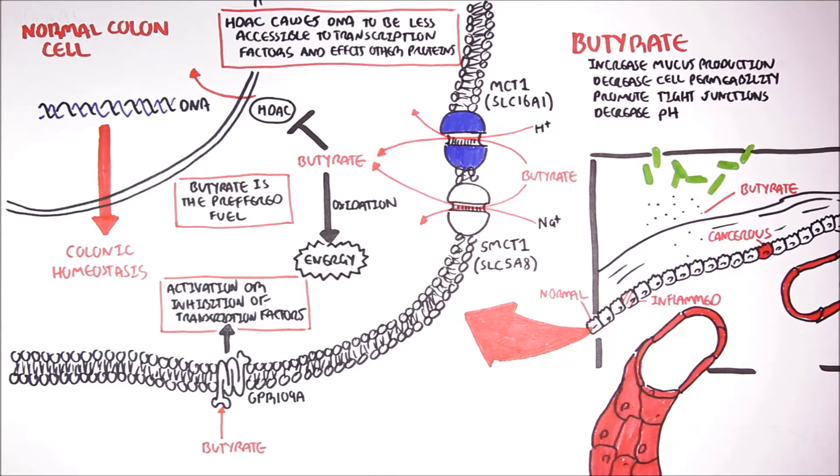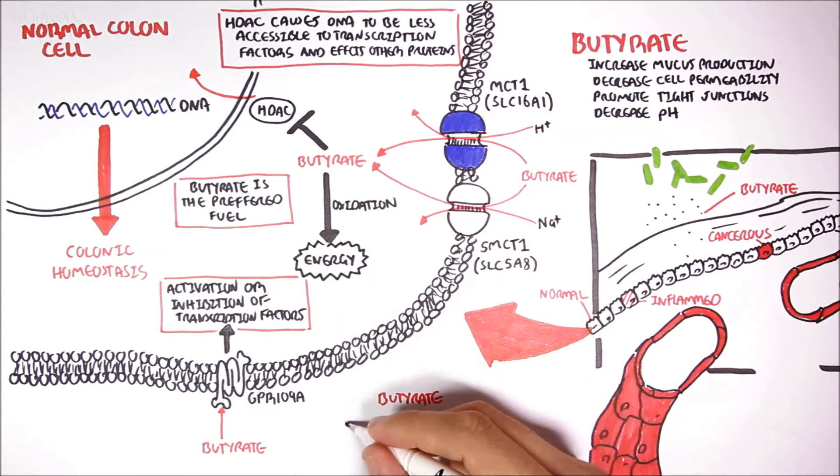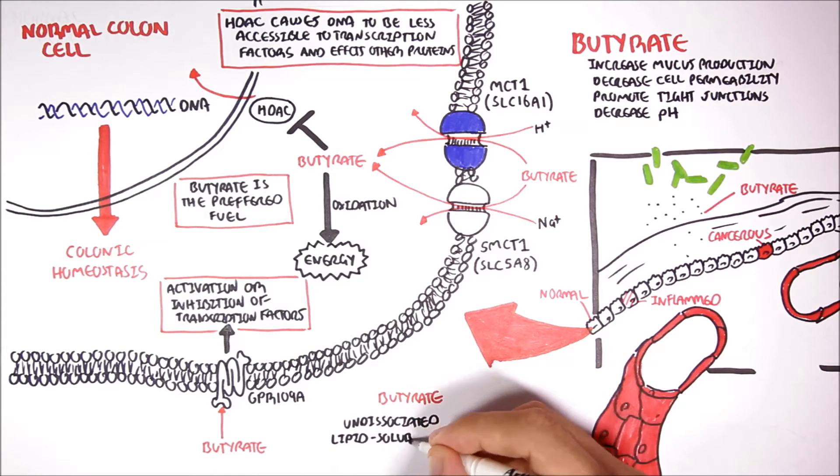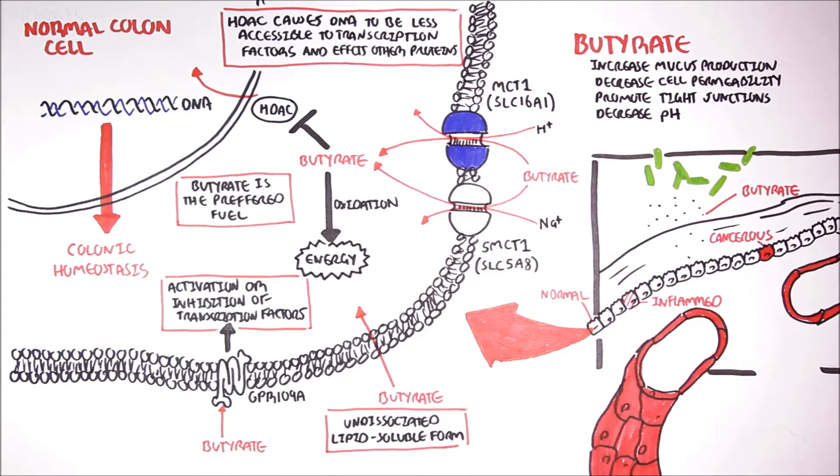Finally, if butyrate is in an undissociated form, which is a lipid soluble form, it can enter the cell by diffusion through the plasma membranes, without receptors or transporters. Now, apart from helping in maintaining homeostasis in the colon, butyrate can exert direct anti-inflammatory effects.